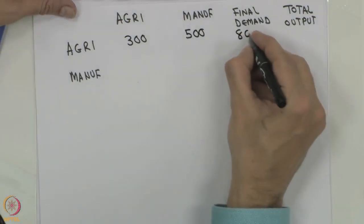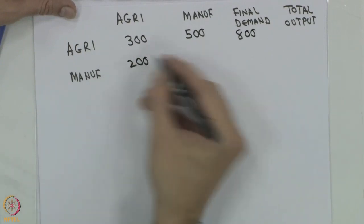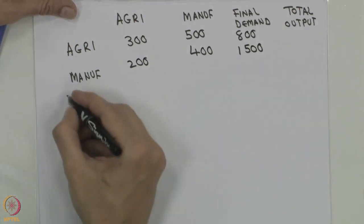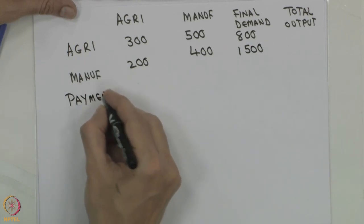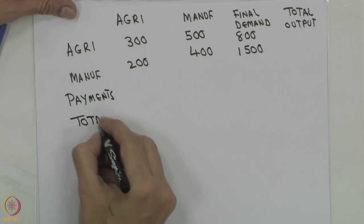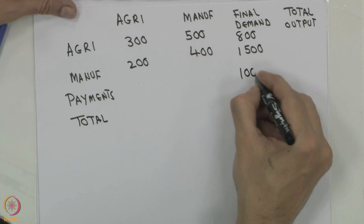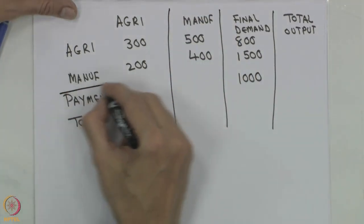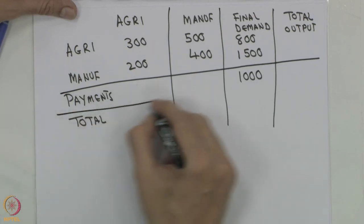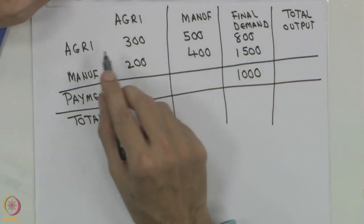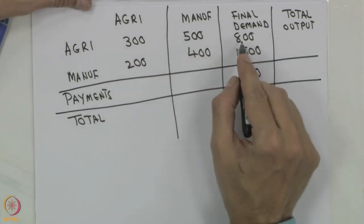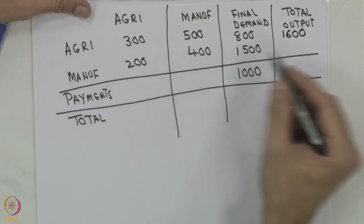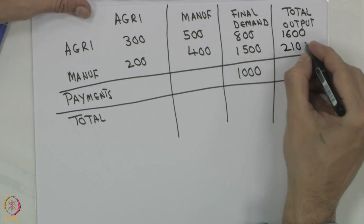So we have the values: 300, 500, 800, 200, 400, 1500, and then the payments sector and totals. This is fairly straightforward. We can sum 300 plus 500 equals 800, plus 800 equals 1600 as the total output for agriculture. For manufacturing: 200 plus 400 equals 600, plus 1500 equals 2100 million rupees.